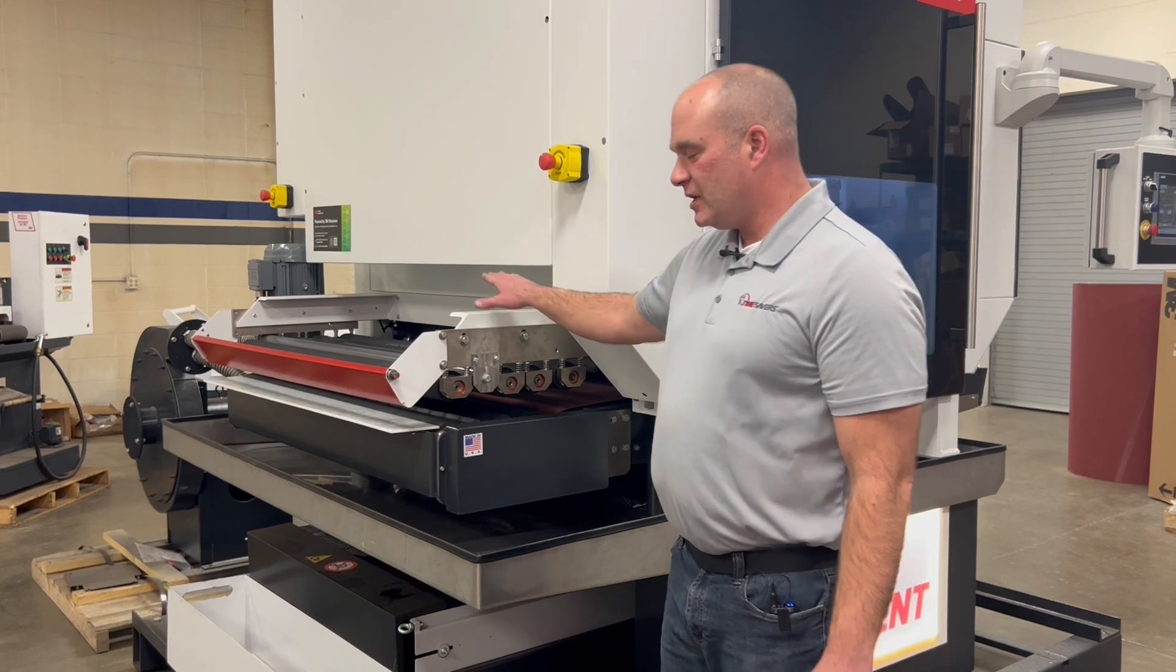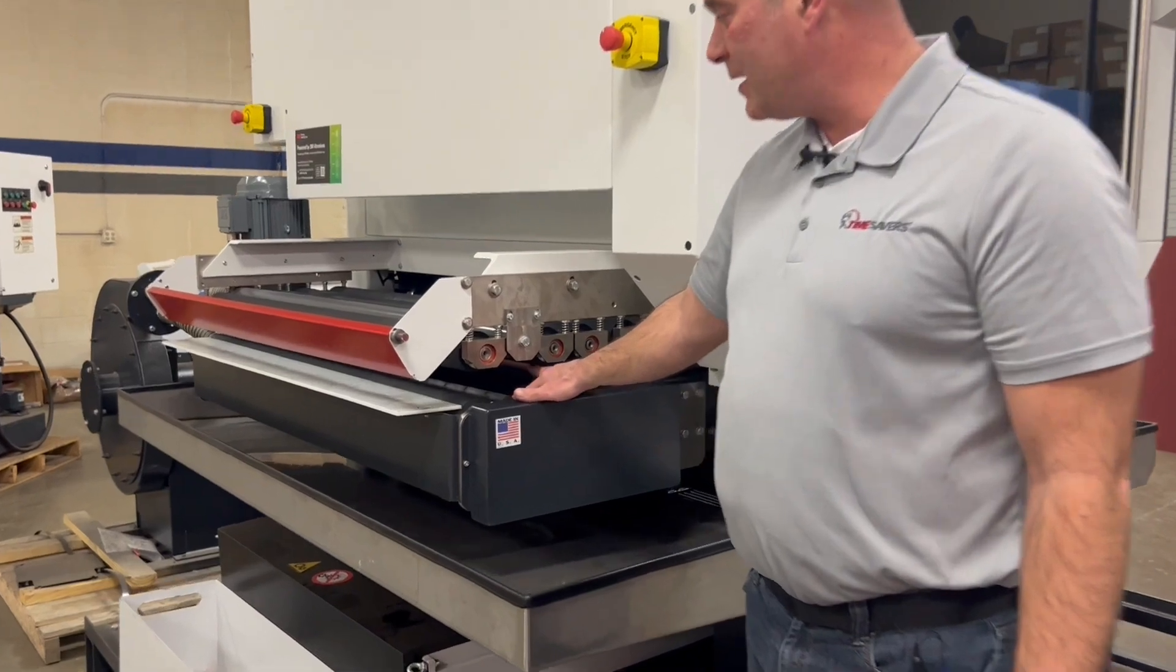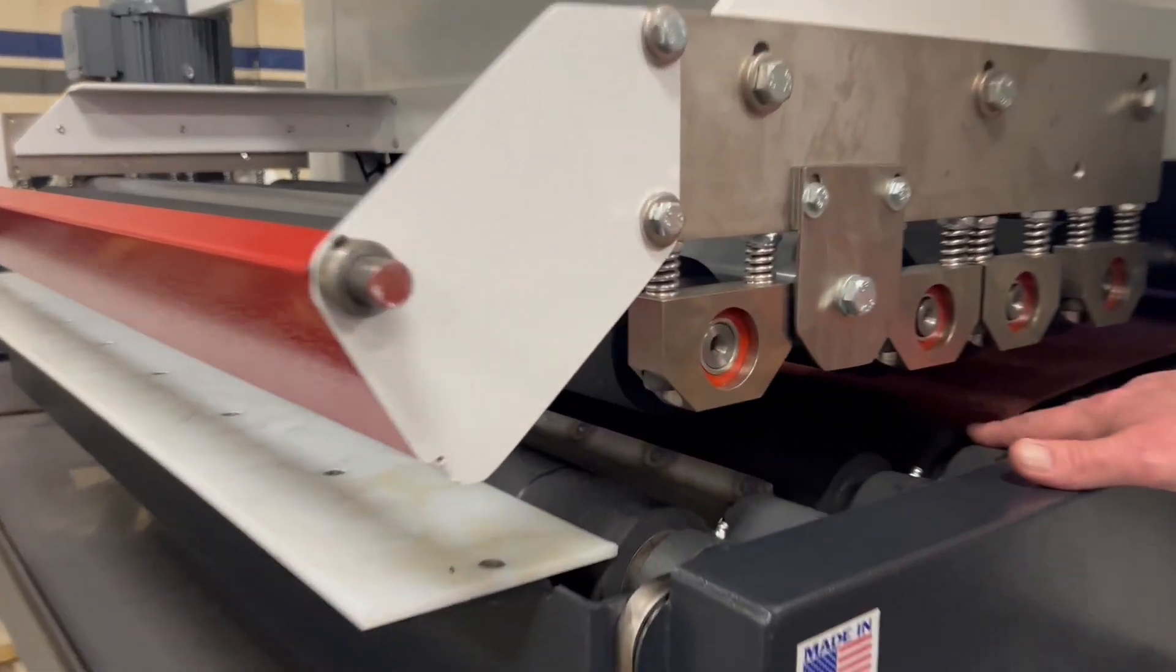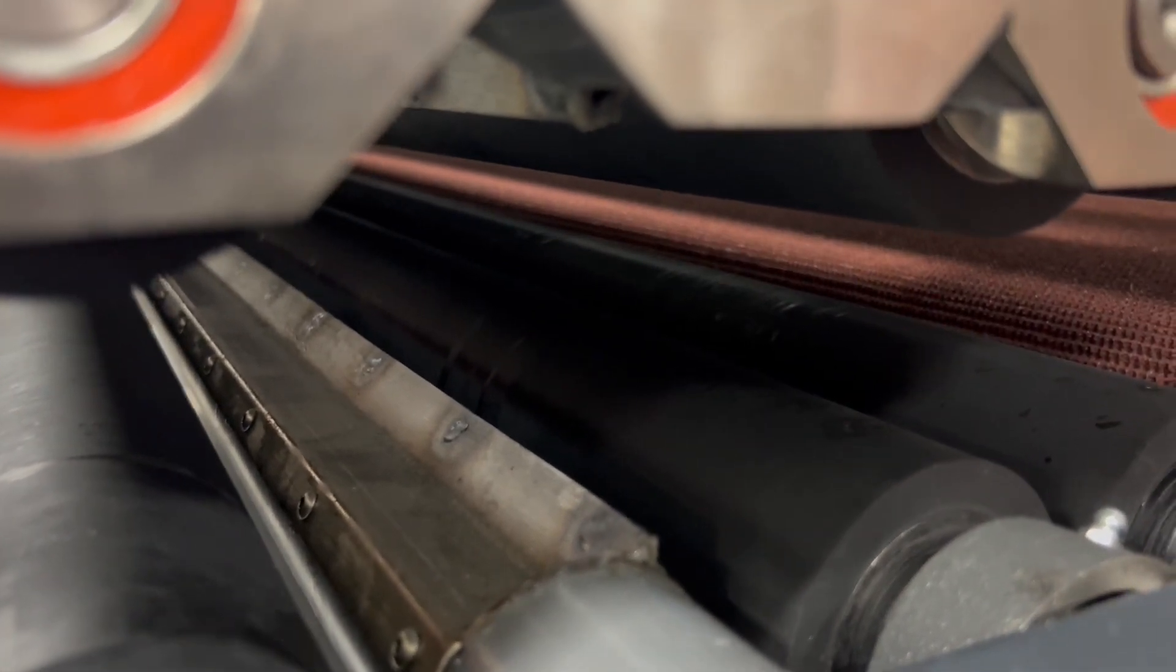On the back of the machine here I'd like to highlight our air knife dryer. We have an air knife dryer on the bottom and also on the top, along with squeegee rolls. This will clean the parts and also dry the parts as they exit the machine.